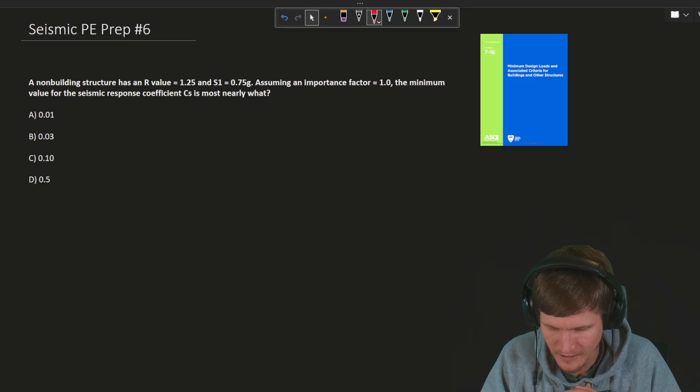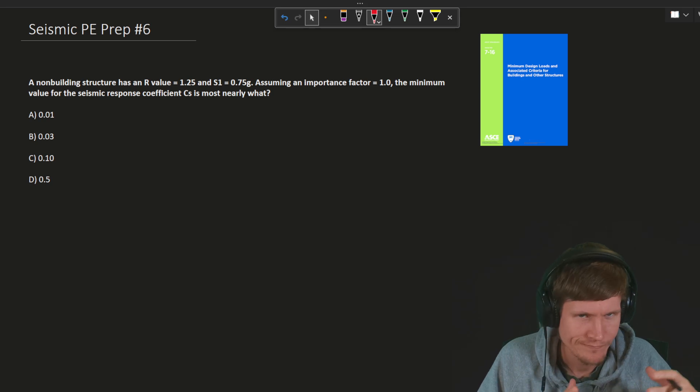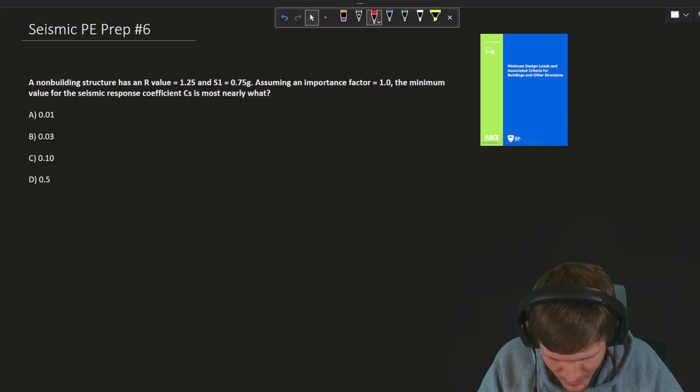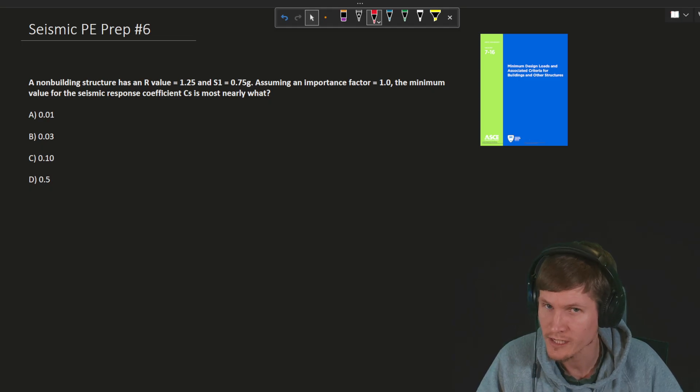A non-building structure has an R value equal to 1.25. We have an S₁ equal to 0.75, assuming an importance factor of 1.0. So it's not a very special non-building structure that we're working with here today. Still, everything's important, but this one, not critical. The minimum value for the seismic response coefficient C sub S is most nearly what? We have a couple of options there.